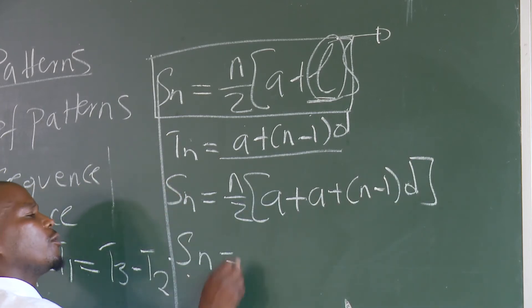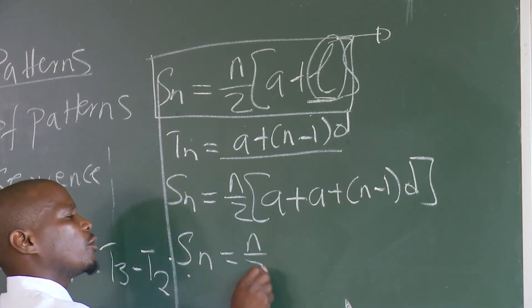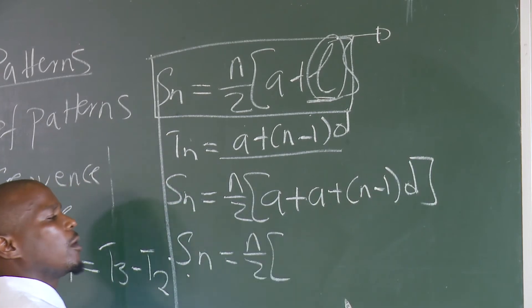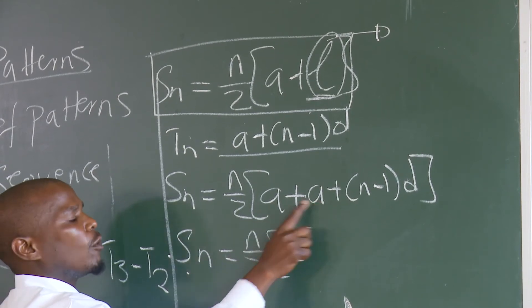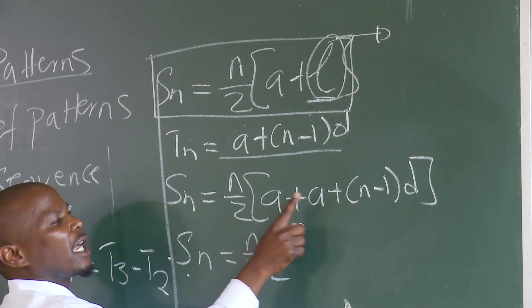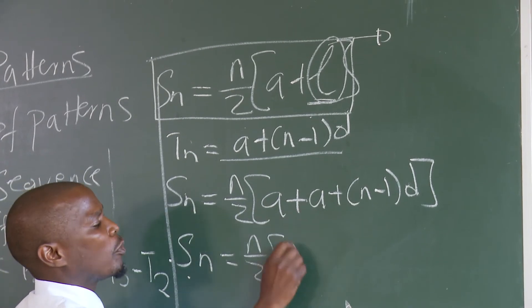SN is equal to N over 2 into A plus A plus (N minus 1) times d.